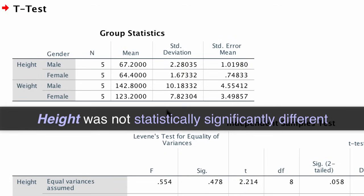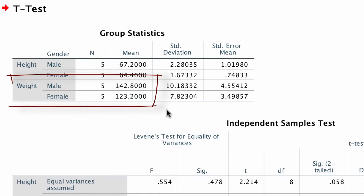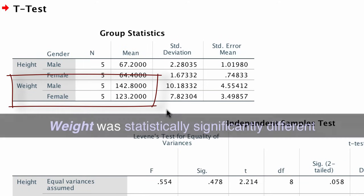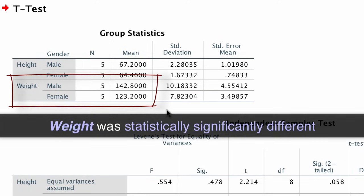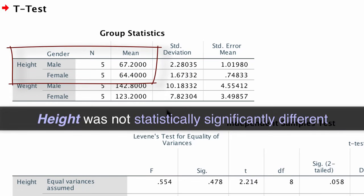So what do you think? Were there any significant differences for height or weight? Height was not different, but weight was different. We can check the actual means in the descriptive statistics for more clarity. Males weighed 142.8 pounds, and females weighed 123.2 on average, so males weighed significantly more than females. But their heights were not statistically significantly different.